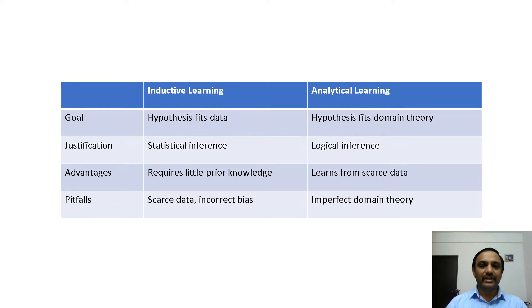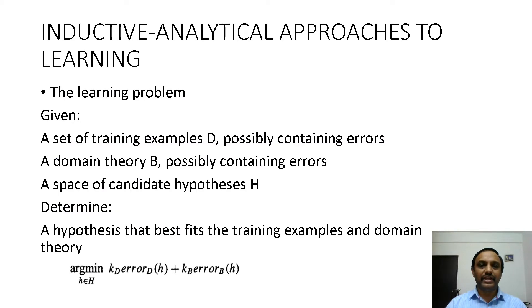In inductive learning, if we provide insufficient data or data with errors, the system we are developing gives poor results. In analytical learning, if we provide prior knowledge with errors, the system also gives poor results. Here we combine these two approaches to form a new algorithm. In pure inductive algorithms, errors in training data lead to improper system design, and similarly in pure analytical learning algorithms, errors in prior knowledge lead to improper design. To overcome those issues, we combine these two approaches.